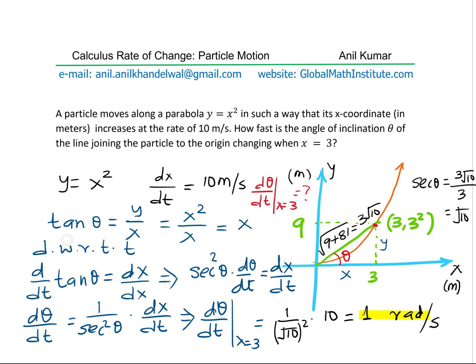Since we want to find rate of change of the angle theta, we wrote the equation tan theta in terms of ratio of y and x, which simplifies to x.